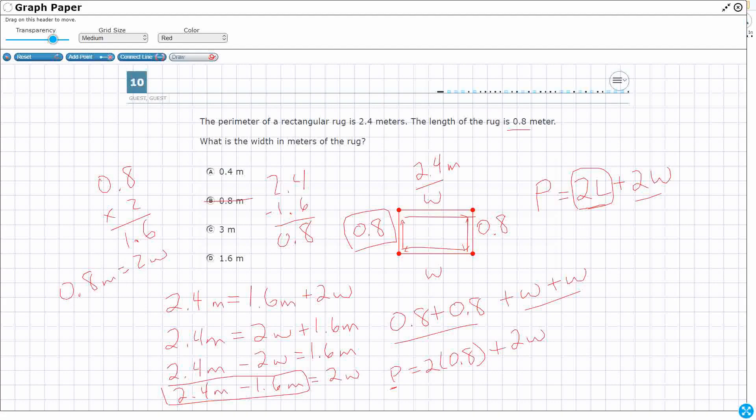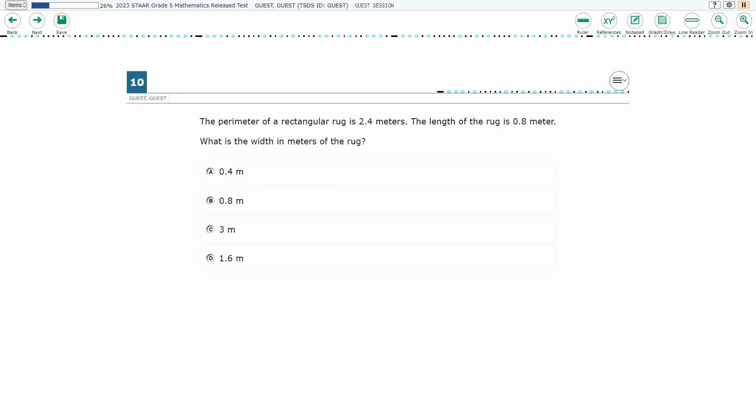Because double the width equals 0.8. So I need to take half of that. And so half of that is going to be 0.4. Because if I double that, that's going to be 0.8. That's my missing number. So my answer here is 0.4 meters.